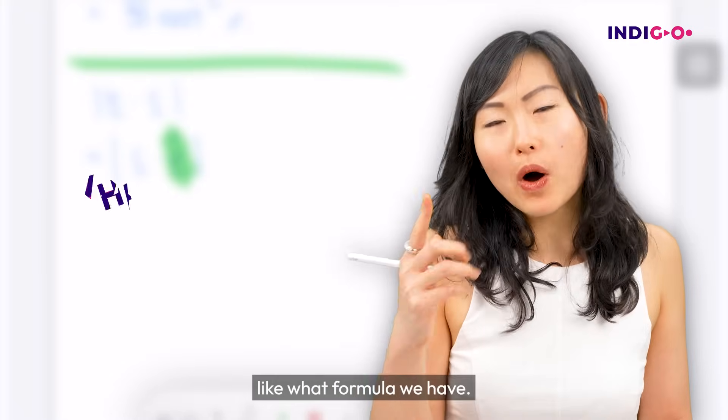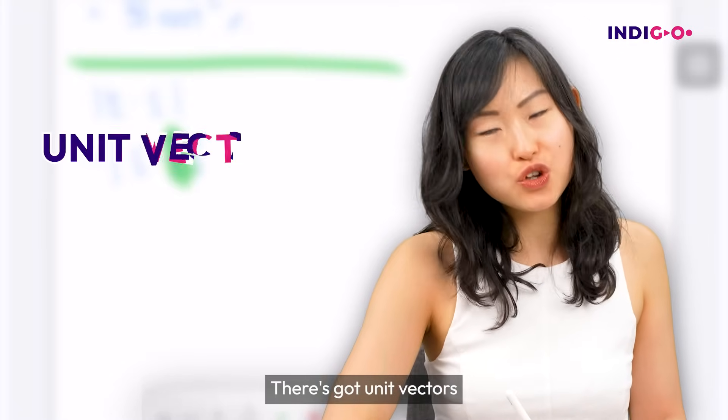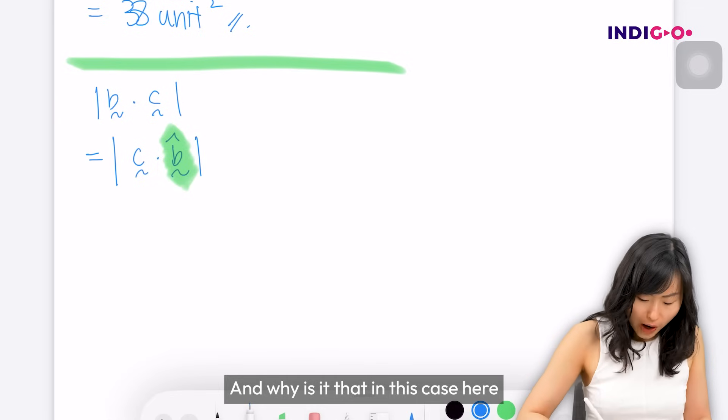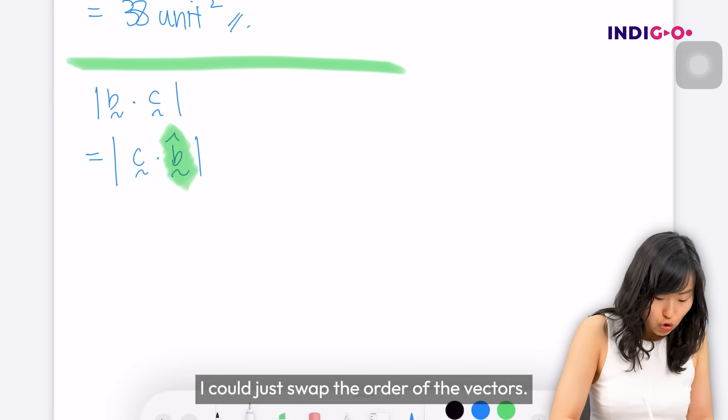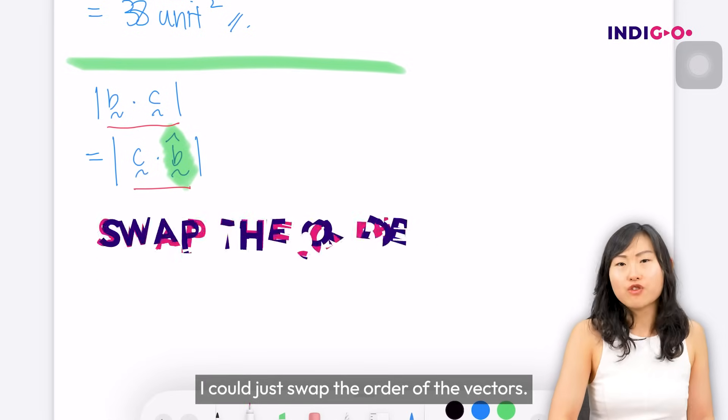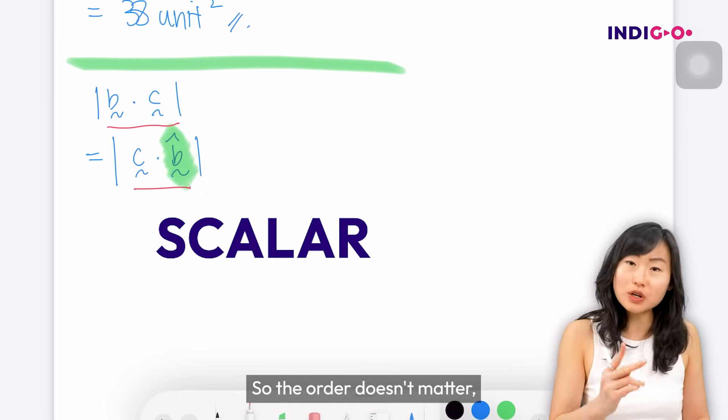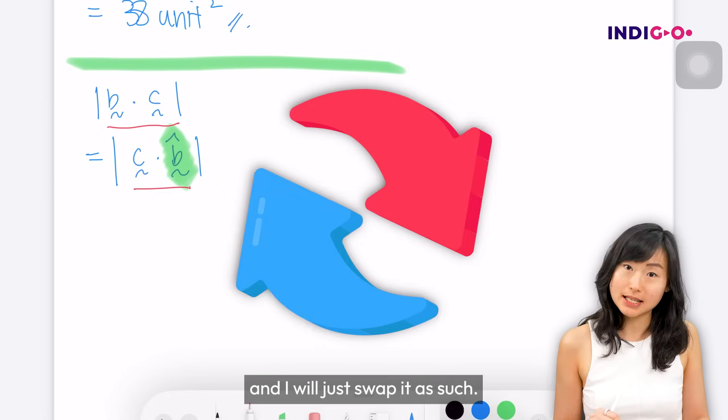So I'm going to think about what formula we have. There's unit vectors and a modulus length of projection vector. And why is it that in this case here I could just swap the order of the vectors? Remember dot products when you resolve them you are going to get a scalar. So the order doesn't matter and I will just swap it as such.